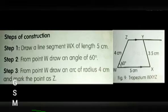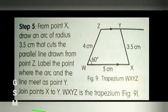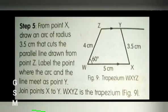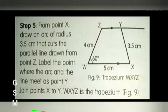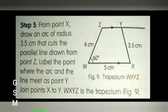Steps for construction: Step 1: Draw a line segment WX of length 5 cm. Step 2: From point W, draw an angle of 60 degrees. Step 3: From point W, draw an arc of radius 4 cm and mark the point as Z. Step 5: From point X, draw an arc of radius 3.5 cm that cuts the parallel line drawn from point Z. Label the point where the arc and line meet as point Y. Join X to Y; WXYZ is the trapezium.